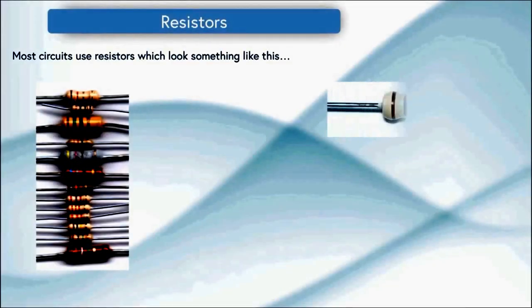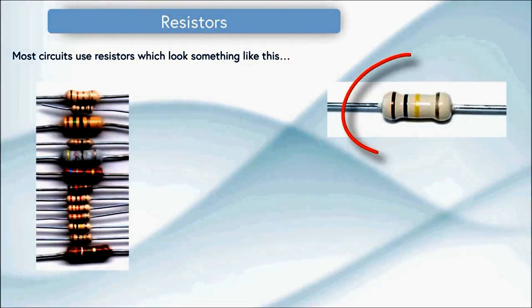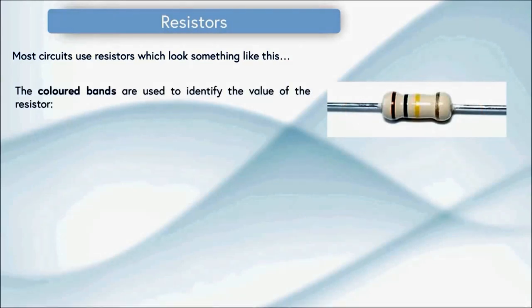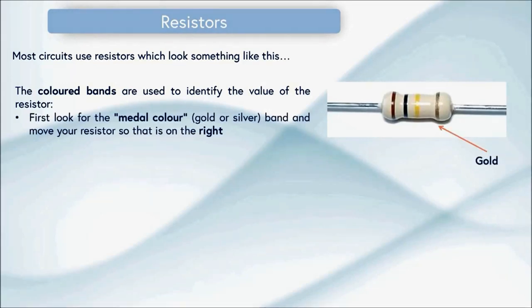Most circuits use resistors which look something like this and here's a zoomed in one. Now we're going to look at how we tell the value of this resistor. The coloured bands are used to identify the value. First look for the metal colour which is gold or silver and then move your resistor so this is on the right hand side. In the example here we've got a gold band so I've moved that to be on the right.